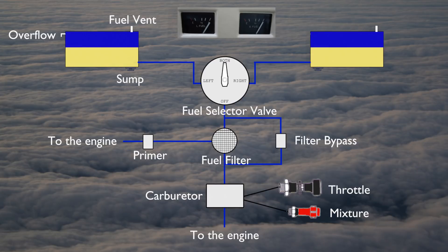Before each flight, the pilot determines how much fuel is required and visually verifies the required fuel is on board by physically checking the fuel tank. Airplane fuel gauges are not used by pilots for flight planning purposes.